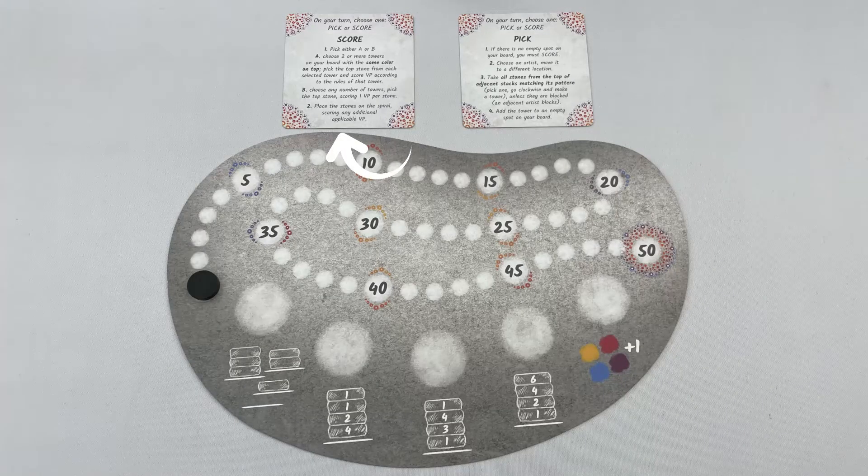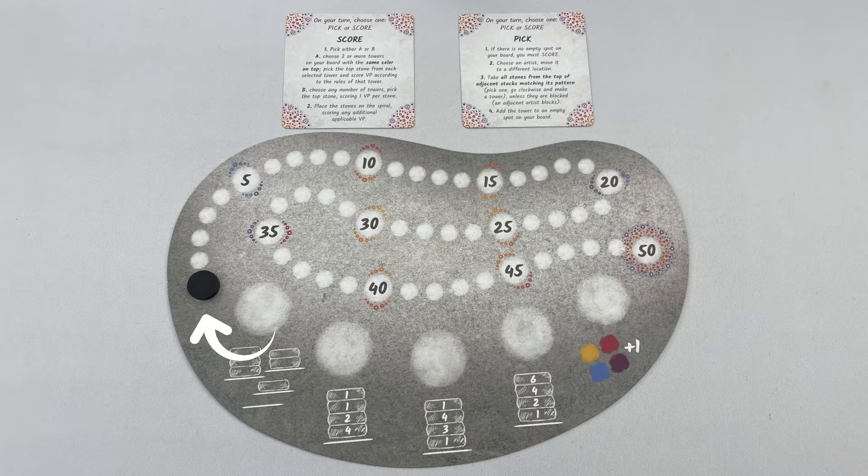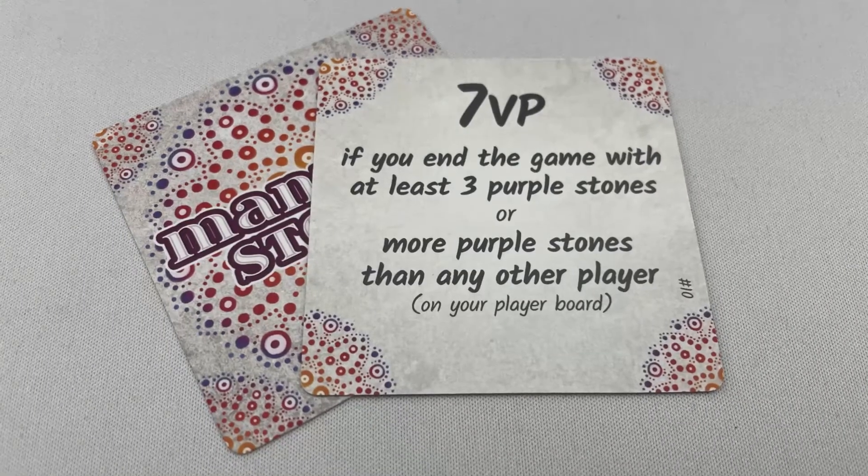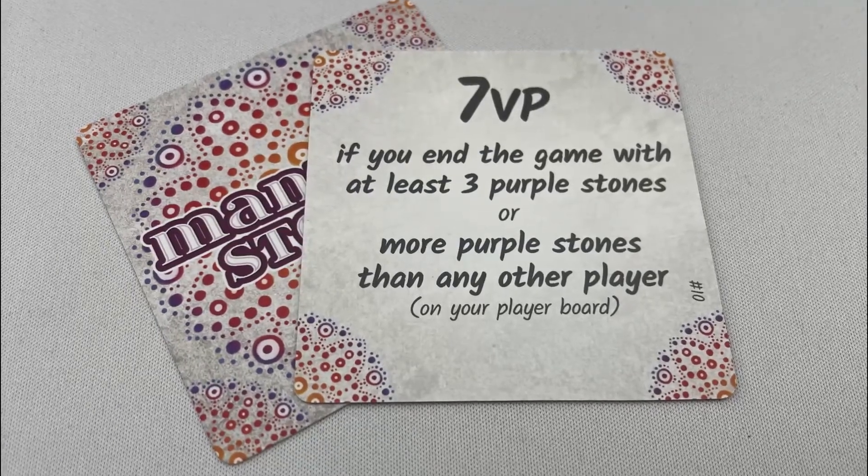Give each player a double-sided reference card and a player board with a score marker placed on the mandala pattern space marking 0 points. Shuffle the 10 objective cards, deal 2 to each player face down and return the rest to the box. Now we'll talk about these more later when we get onto end game scoring, but just know each player can look at their own objective cards at any point they like.